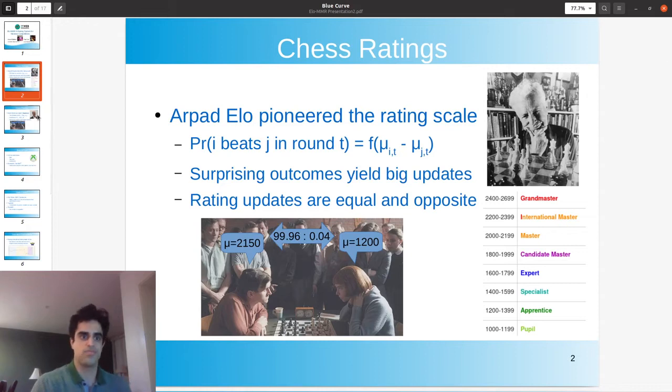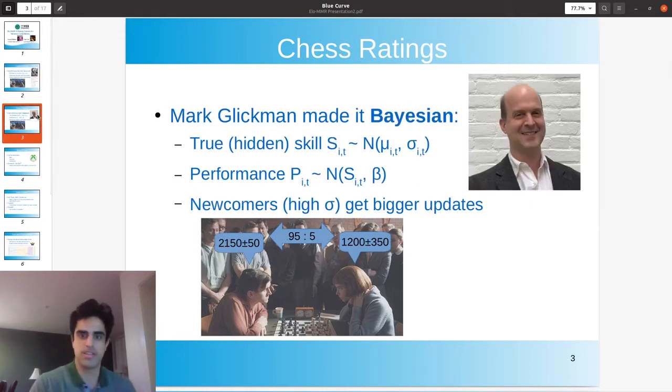And so Glickman improved this rating system by putting it on firm mathematical Bayesian foundations. And without going into too much detail, the main idea is that in addition to this rating mu, there is now an uncertainty sigma in each player's, associated with each player's rating. So here, Harry is not only highly rated, but he's an established player, which means we know he's good. So there's very low uncertainty, whereas Beth, the newcomer has a very high uncertainty.